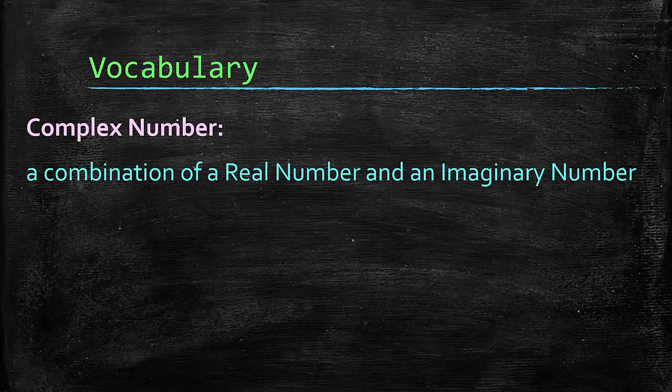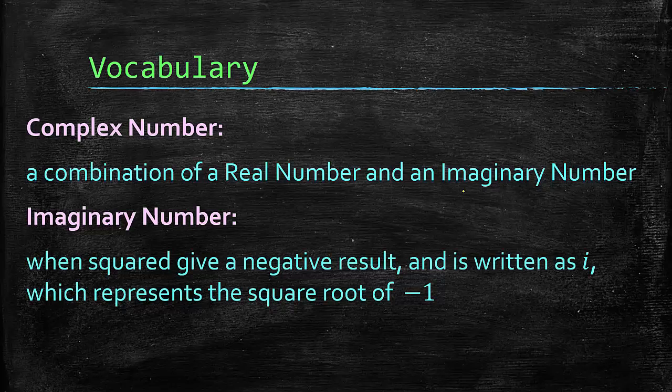Complex number - that is a combination of a real number, which you should be aware of because we've been working with them all semester and all of your life, and an imaginary number, which you have not worked with before. An imaginary number is a number that when squared gives a negative result, and we write it as i, which represents the square root of negative one. So you could say i equals square root of negative one. We use that because, remember, you cannot have, with real numbers, a square root of a negative number. So this allows us to do that.